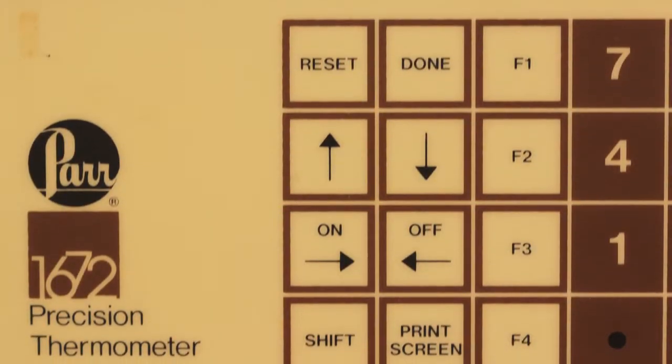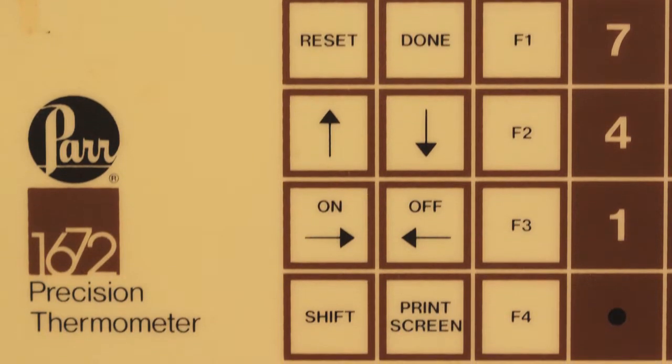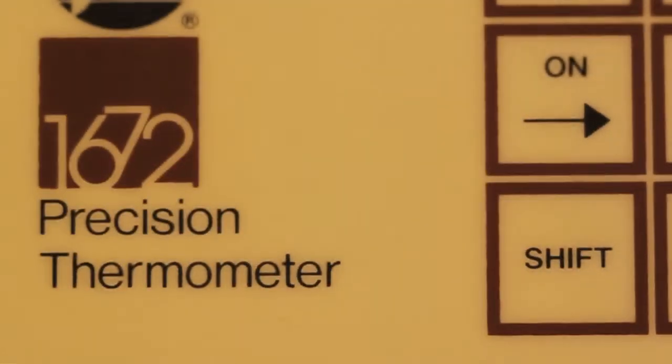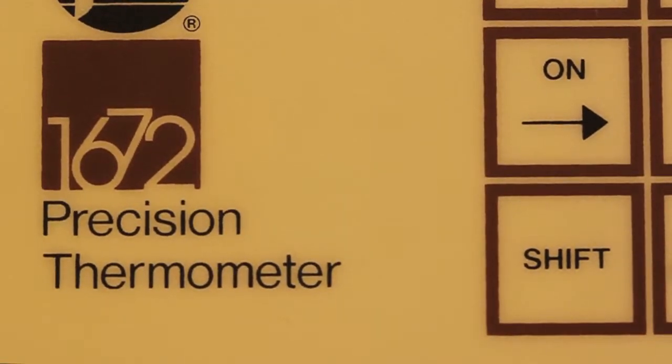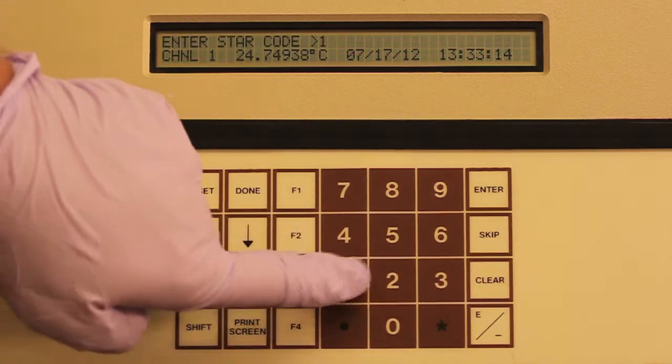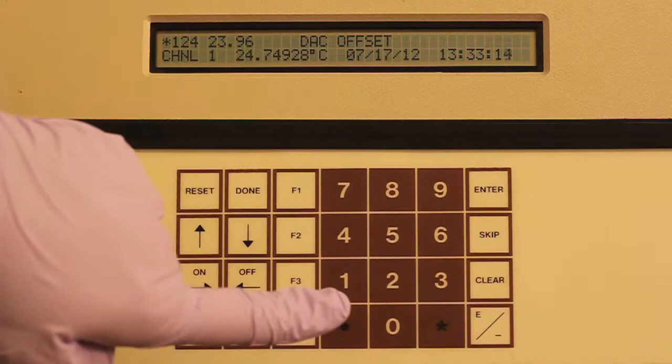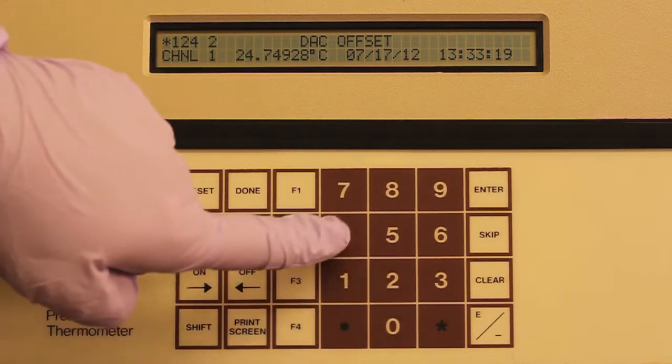The digital output of the precision thermometer is determined by setting the offset, used to set the baseline, and the span, used to set the temperature range of the thermometer. The offset can be set by pressing star 124, enter, followed by the temperature you wish to use, followed again by enter.